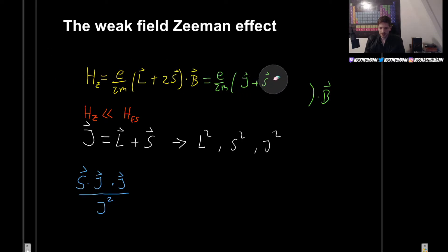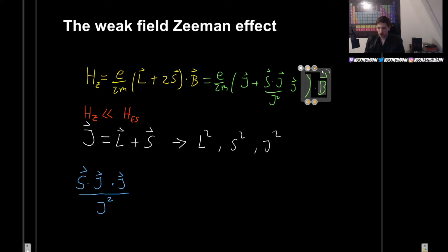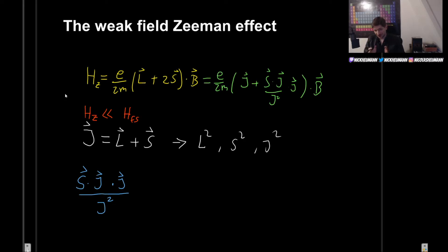Let's get rid of S. Instead of S, we will have S dot J divided by J squared, and this is also multiplied by J. This is the formula for our Hamiltonian — this is the weak field Zeeman effect Hamiltonian.